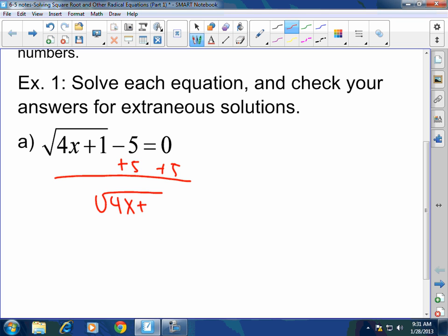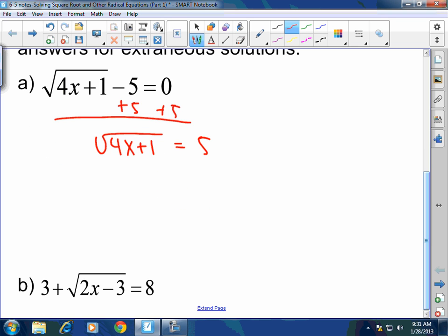So I have the square root of 4x plus 1 equals 5. Now, at this point, now it's easy, guys. How do I get rid of a radical? Well, we've just been practicing that. You go ahead and square it. But whatever you do to one side of the equation, you must do to the other. And when you square a radical, it cancels out. You got 4x plus 1 equals 5 squared, which is 25.